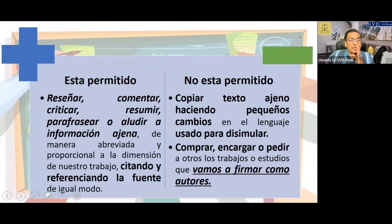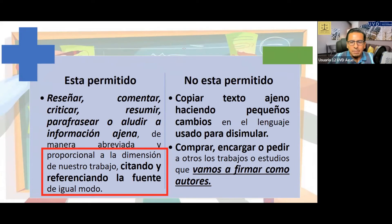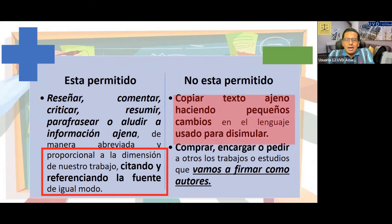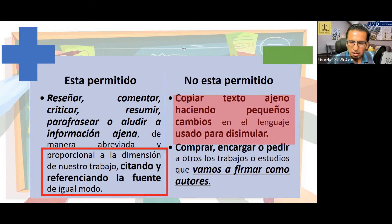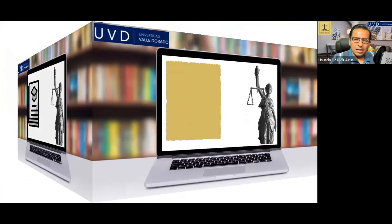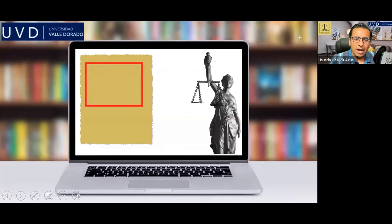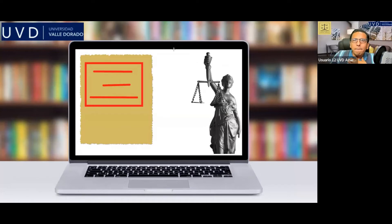Está permitido reseñar, comentar, criticar, resumir, parafrasear, aludir información ajena, siempre y cuando hagamos la cita y la referencia al pie de página correspondiente. No está permitido copiar texto ajeno haciendo pequeños cambios al lenguaje con la finalidad de disimular. Esto es plagio. A veces tenemos un texto que copiamos y pegamos y creemos que así vamos a engañar al sistema: cambiamos palabras al principio, en medio y al final y lo hacemos como propio. A esto se le conoce como plagio.